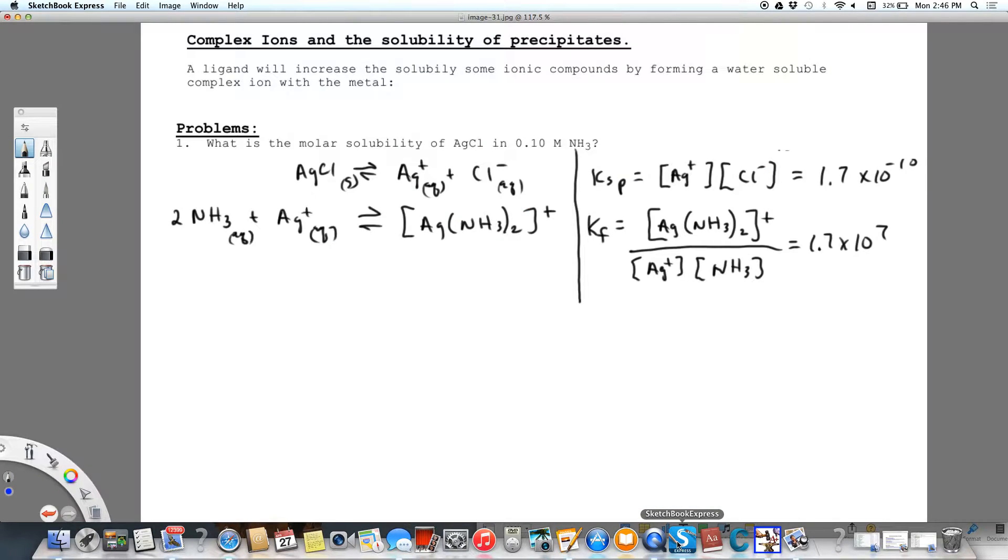In a previous problem, we showed that if we add ammonia to a solution of silver, the silver gets complexed at a very high amount because the Kf value is very, very high. So what happens in a situation where we have silver, which normally, if we add chloride, is going to precipitate?